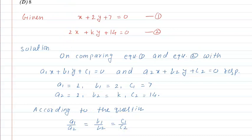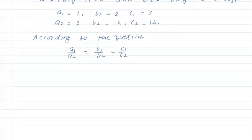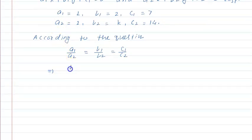From our equations, a1 is 1, a2 is 2, b1 is 2, b2 is k, c1 is 7, and c2 is 14.